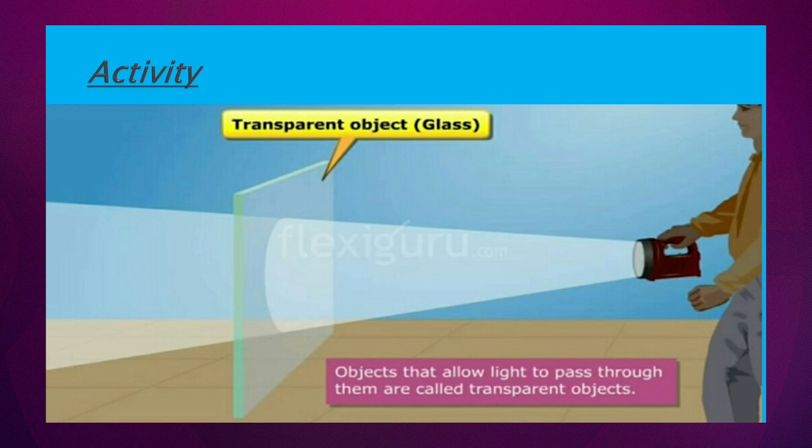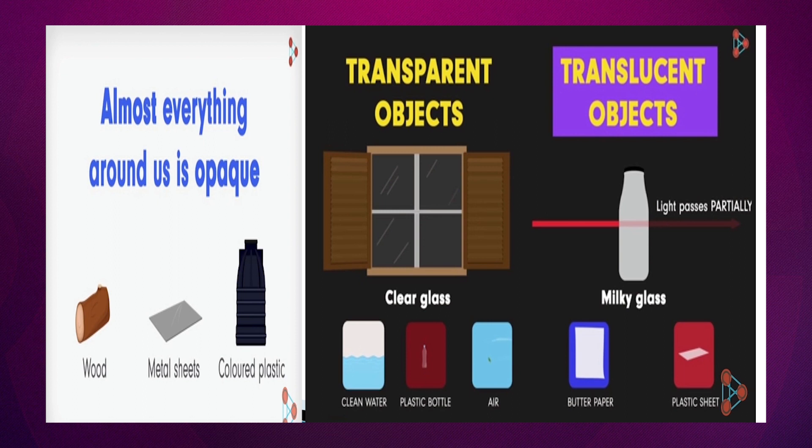Next is your transparent object. Ab ye jaise ke aapka glass. Glass ke andar se poori light jo hai aar par ho raha hai. Ye kuch examples hai. Opaque object ke wood. Ha to wood hai, jaise metal sheets hai, colored plastic hai, ye sab aapke opaque object ke example hai.